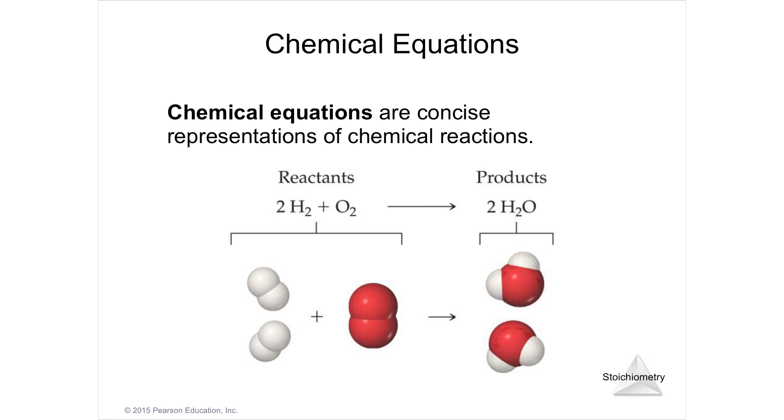This is called a coefficient, and this is called a subscript. So the subscript is telling you how many atoms you have in a molecule, and then the coefficient tells you how many molecules that you have.